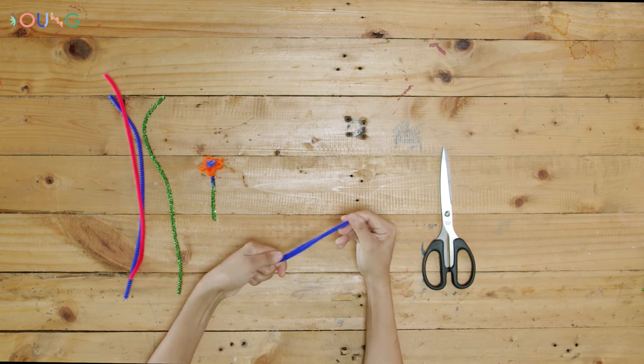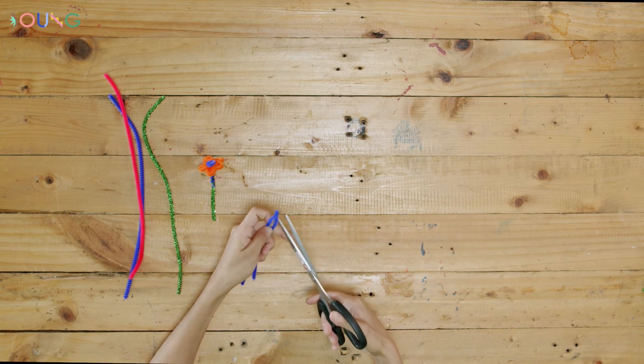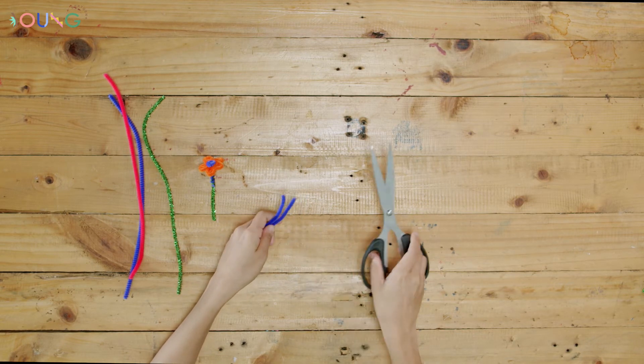So let's jump right into the video! First, take the purple pipe cleaner, fold it into two, and cut it in half.